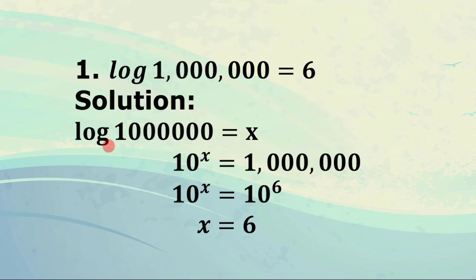Written in exponential form, we have 10 raised to x equals 1,000,000. We express 1,000,000 as a power of 10 — that is 10 raised to 6. So we have 10 raised to x equals 10 raised to 6. They have the same base, so obviously x equals 6. That's the reason why the answer is 6.